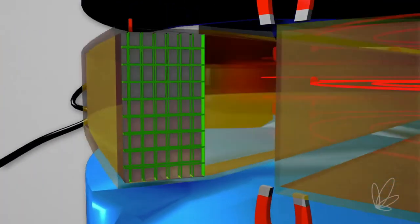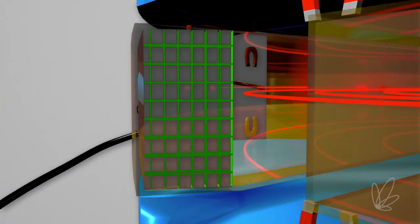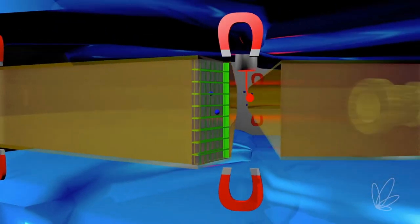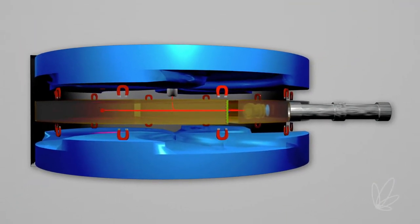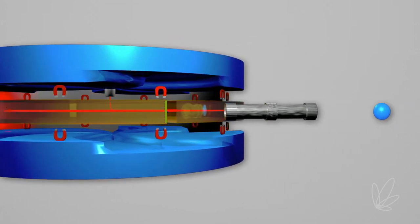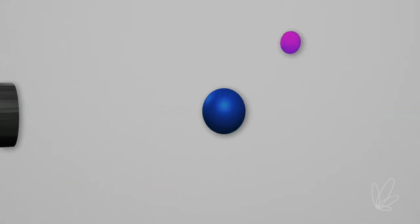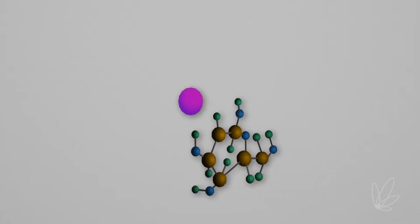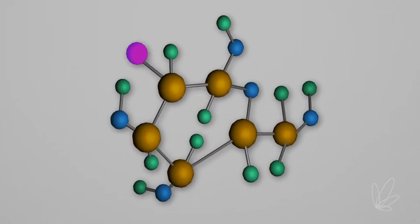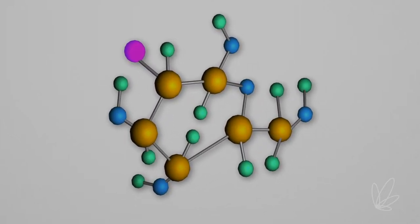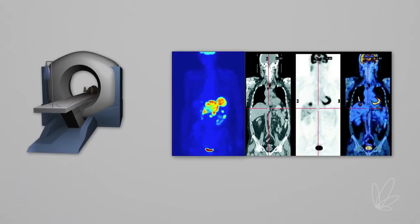When the ion hits the extraction foil, it is stripped of its electrons, leaving a positively charged proton that then travels down a beam line toward a target. When the high-energy proton collides with the nucleus of an atom in the target, a nuclear reaction changes the atom's structure, creating a radioisotope. The radioisotope is then added to a molecule — in this case a sugar molecule — making a radiopharmaceutical that can easily be absorbed by the human body.